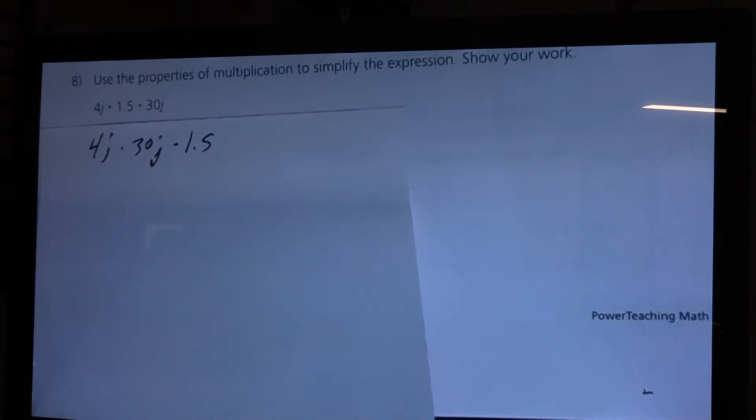Now, what property allows us to move factors around without affecting the product? Okay, I see a lot of hands up. Merle. Commutative. The commutative property.